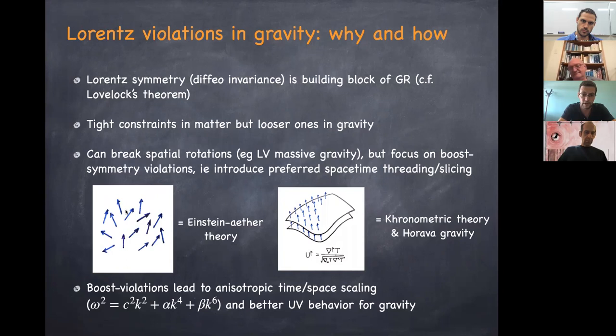The first approach — introducing a preferred time direction at each spacetime event — goes under the name of Einstein-Aether theory. The second approach — choosing a preferred foliation, a dynamical slicing of your spacetime which serves as a dynamical absolute time coordinate — is known as khronometric theory or Hořava gravity.